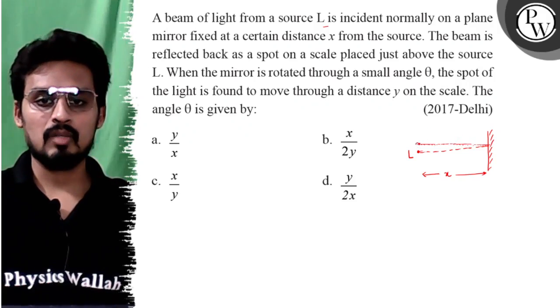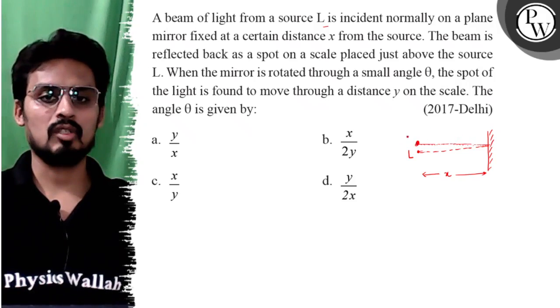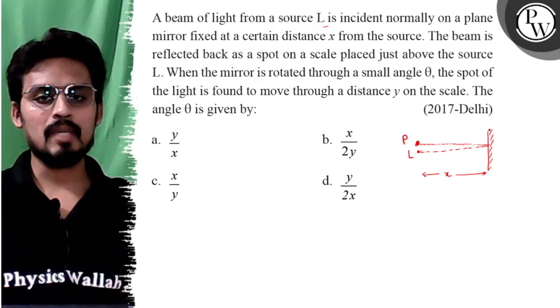Okay, it reflects. Here is the spot, it's called P. What did we do? We rotated the mirror through a small angle theta.